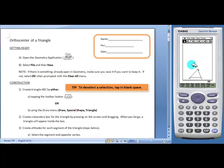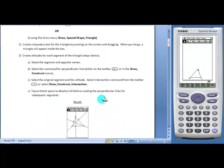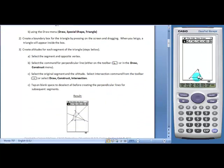Next, students will construct the altitudes for each segment of the triangle. They'll do this by selecting a segment in the opposite vertex and using the perpendicular line tool.